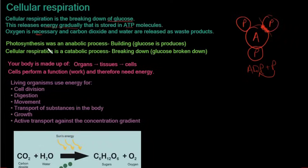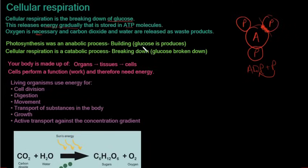Photosynthesis and cellular respiration walk hand in hand because the products of one are the requirements of the other. Photosynthesis is an anabolic process — a building up process — where glucose is produced. Cellular respiration is a catabolic process — a breaking down process — where glucose is broken down.